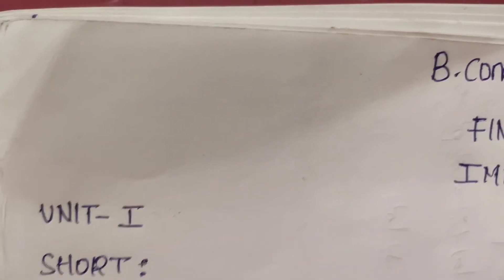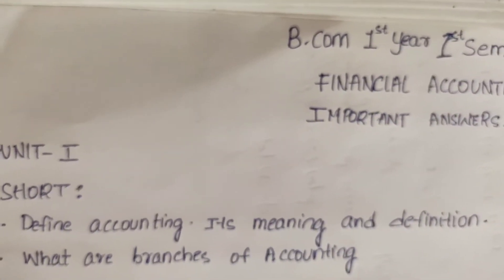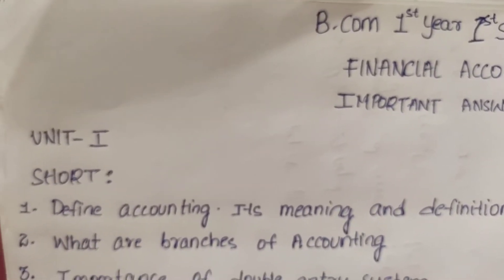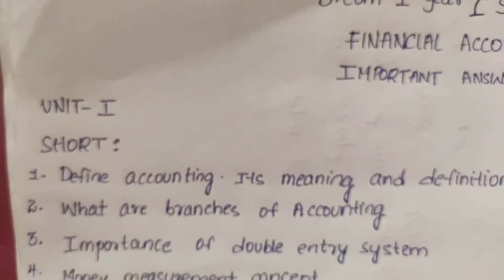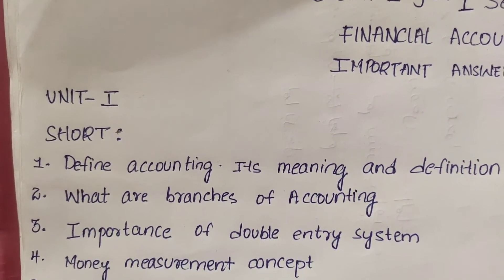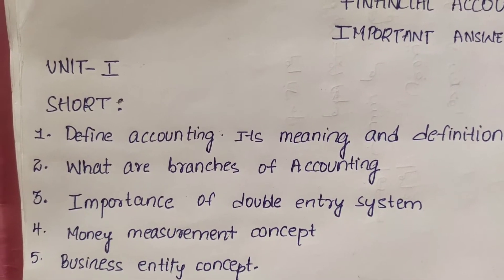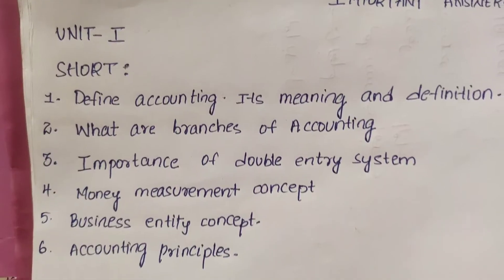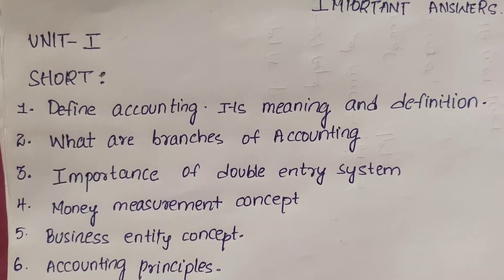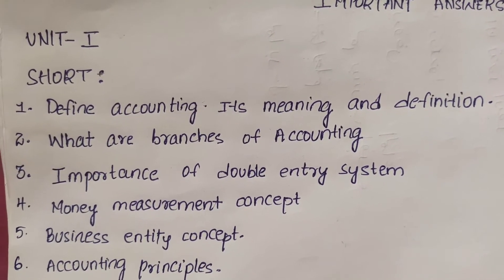1st unit, Short Answers: Define Accounting — its meaning and definition. 2nd, What are the Branches of Accounting? 3rd, Importance of Double Entry System. 4th, Money Measurement Concept. 5th, Business Entity Concept. And last, Accounting Principles. These are the important topics of Unit 1 short answers.